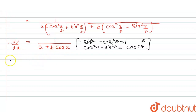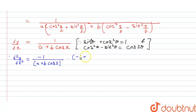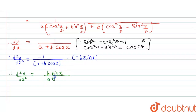Now we need to find d²y/dx², so we will differentiate this again. Therefore d²y/dx² is equal to — differentiation of this will be minus 1 upon (a plus b cos x) squared, into differentiation of a plus b cos x which is minus b sin x. So minus into minus becomes plus, and we get b sin x upon (a plus b cos x) squared. This is what we had to prove.